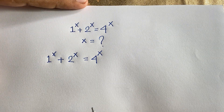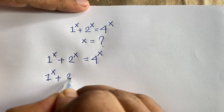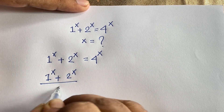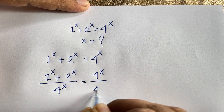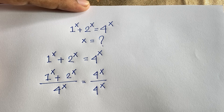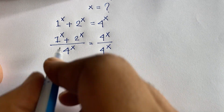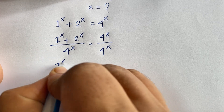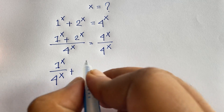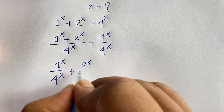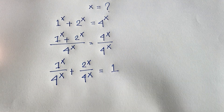If I divide both sides by 4 to the power x, we'll find: (1^x + 2^x) / 4^x. On the right side, 4^x over 4^x. I can say here is 1^x over 4^x plus 2^x over 4^x is equal to 1.